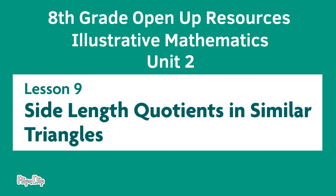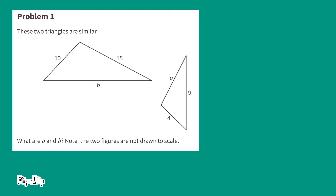Eighth grade Open Up Resources Illustrative Mathematics, Unit 2, Lesson 9: Side Length Quotients in Similar Triangles. Problem number one. These two triangles are similar. What are A and B? Note the two figures are not drawn to scale.